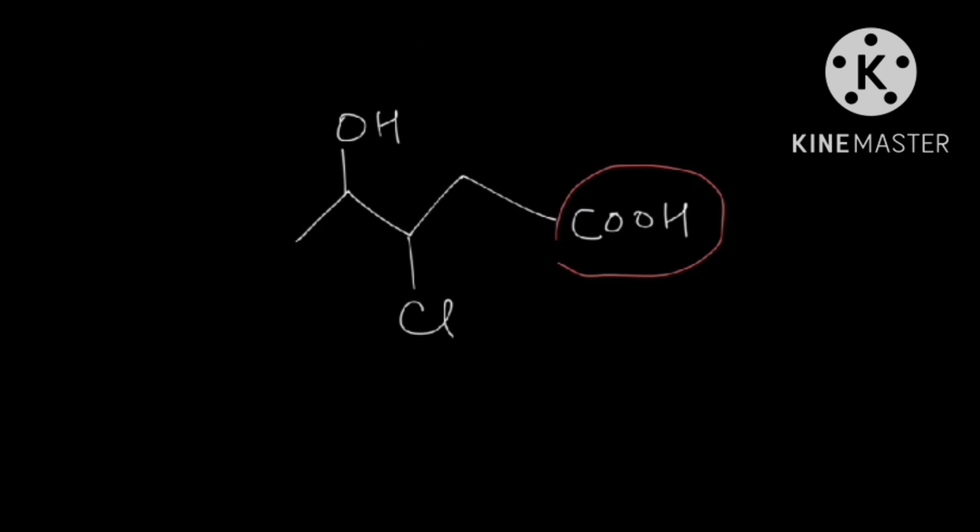And the parent chain, if you watch carefully, is this. That means there are two groups that are not part of the parent chain and that are not the functional groups. One is the chlorine over here and another is the OH group. Now these two groups are what we call substituents.